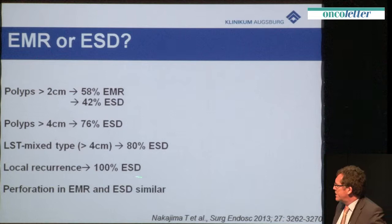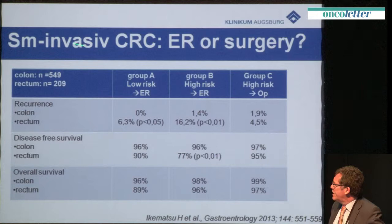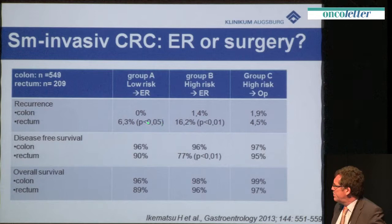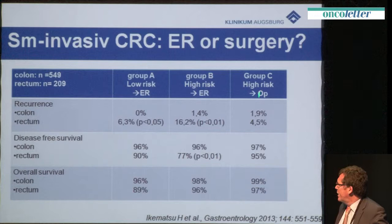The perforation rate is now no major problem — it's nearly similar for both techniques. A study looking at long-term follow-up of submucosal invasive colorectal cancer divided patients into three groups. In the low-risk group, there was a statistically significant difference between rectal and colon cancer, but no difference in disease-free survival or overall survival. In the high-risk group — the main message — there was a difference in recurrence rate for endoscopic resection treatment and also in disease-free survival. Only those patients who had surgery in the high-risk group showed no difference between colon and rectum.